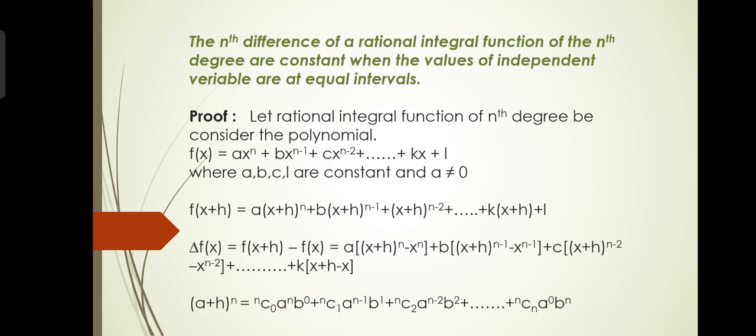Let f(x) be the polynomial of degree n in x, given by f(x) = ax^n + bx^(n-1) + cx^(n-2) + ... + kx + l, where a, b, c, d are constants and a ≠ 0. Why is a ≠ 0? Because if a = 0, then we cannot find the value of the nth degree polynomial.